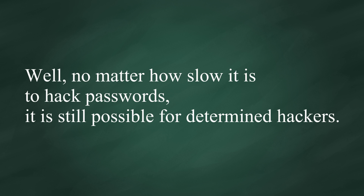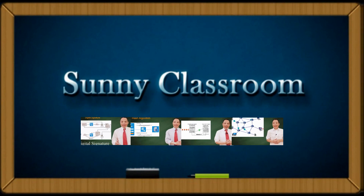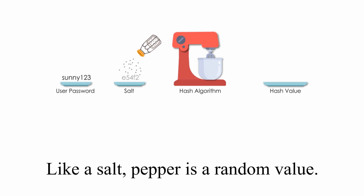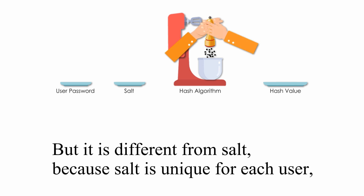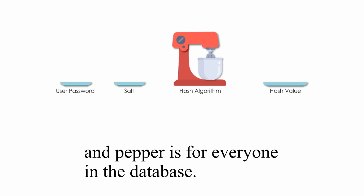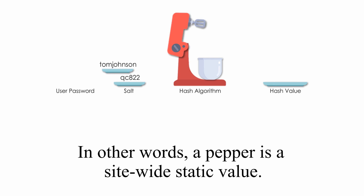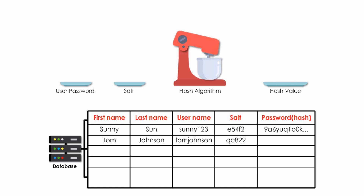Well, no matter how slow it is to hack passwords, it is still possible for determined hackers. That's why we need another spicy stuff: pepper. Like a salt, pepper is a random value. But it is different from salt, because salt is a unique value for each user, and pepper is for everyone in the database. In other words, a pepper is a site-wide static value. Pepper is not stored in a database. It is a secret.